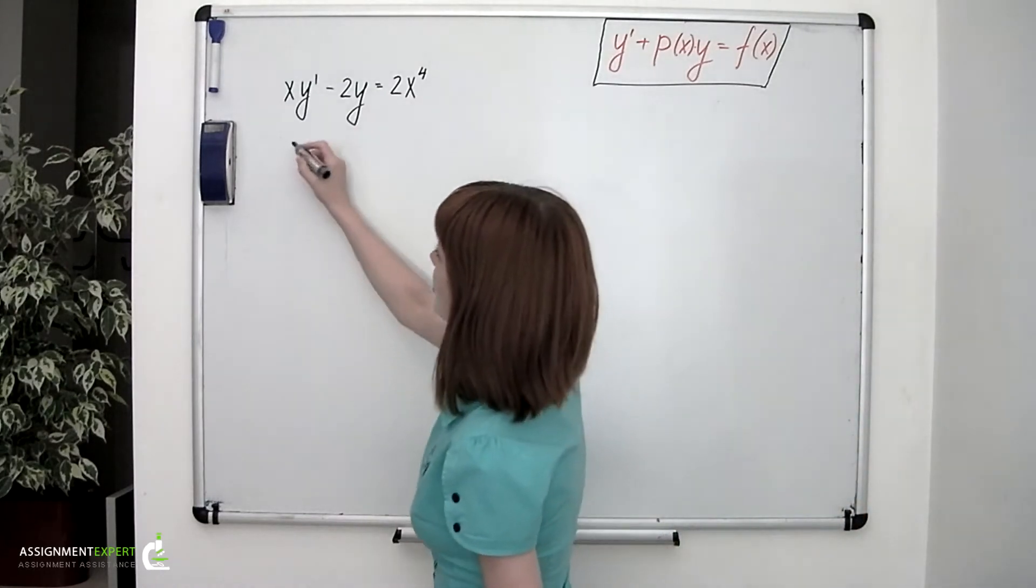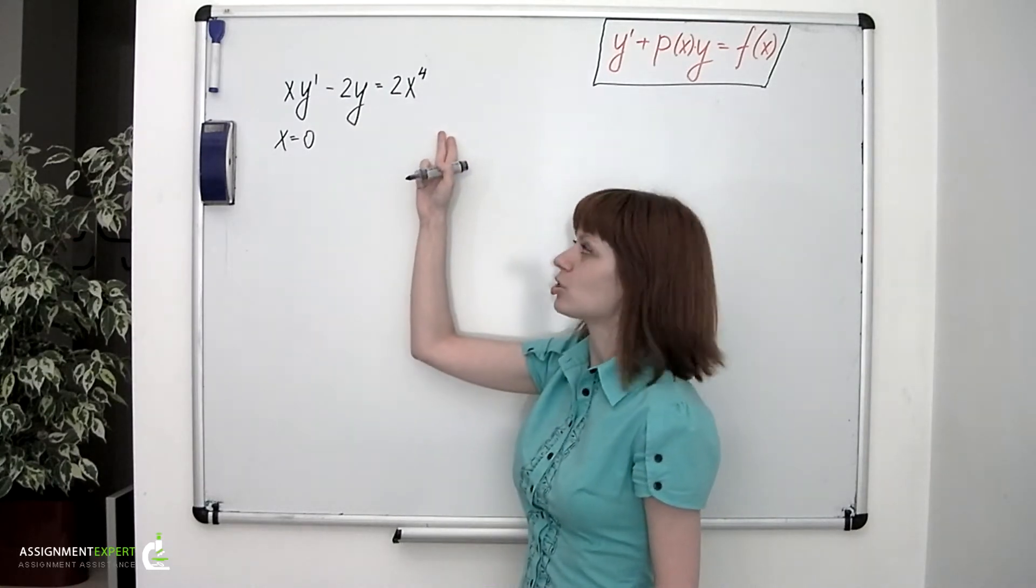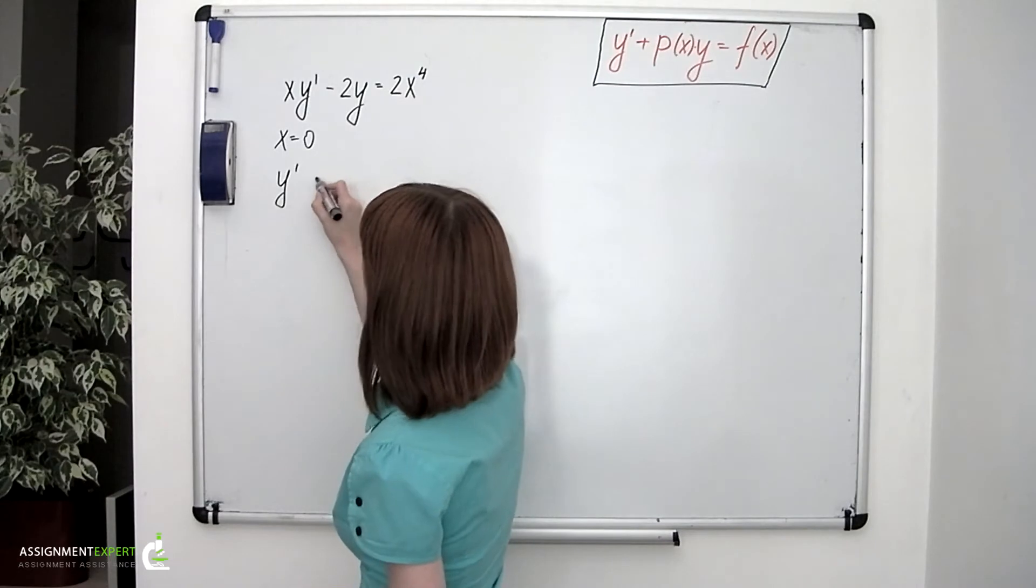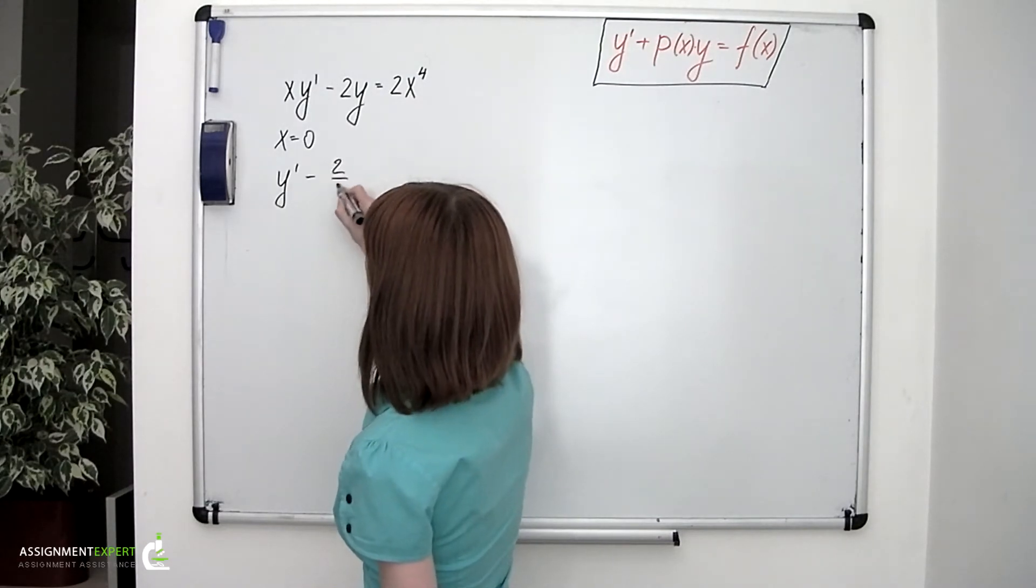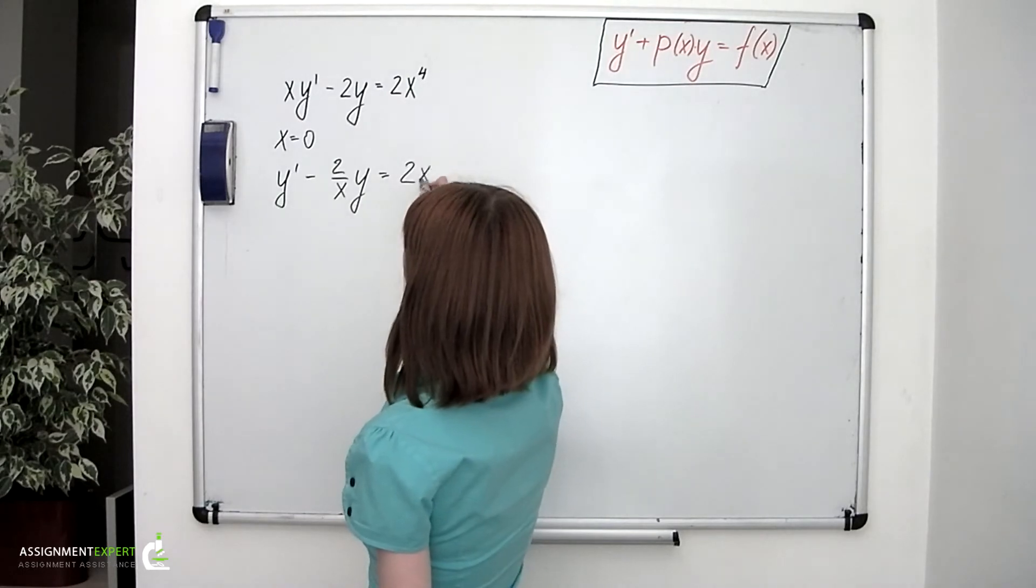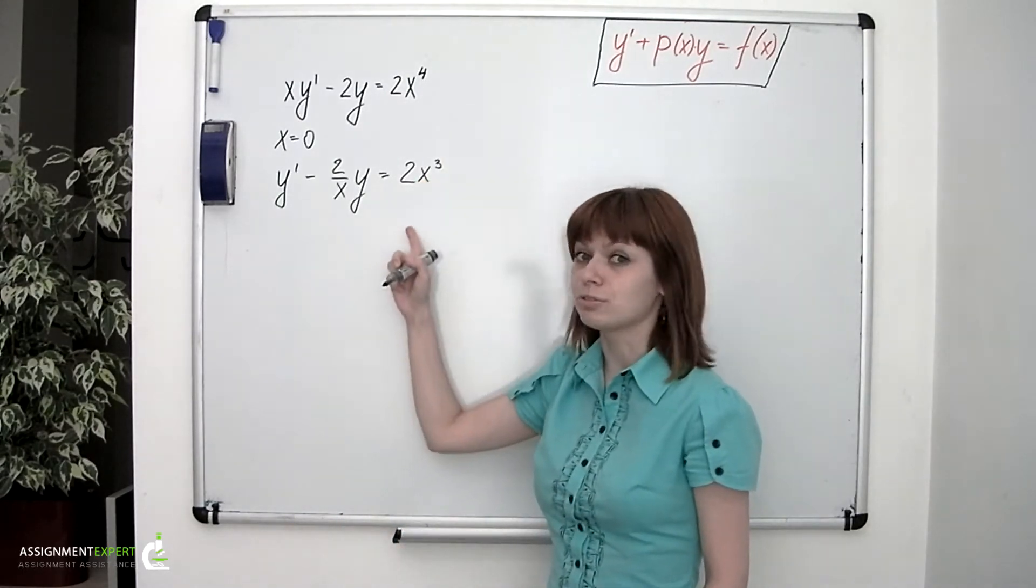So, assuming that x isn't equal to 0, we can divide both left and right sides of this equation and obtain the following. y prime minus 2 over x times y equals 2x cubed. Now we have our equation in the general form.